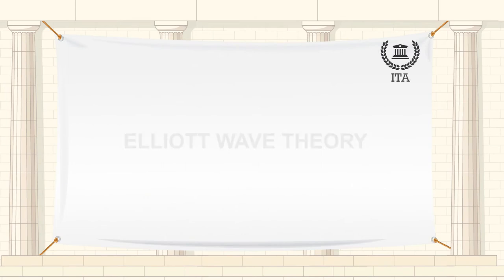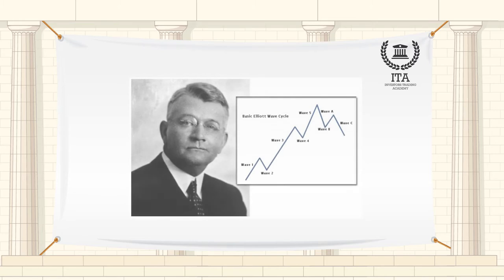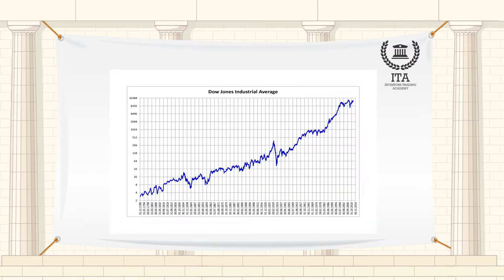The Wave Principle was developed by Ralph Nelson Elliott. It is a discovery that social or crowd behavior trends and reverses in recognizable patterns. Using stock market data for the Dow Jones Industrial Average as the main research tool,